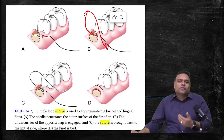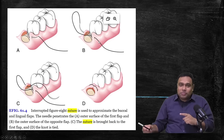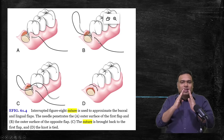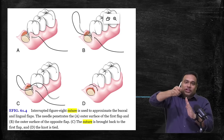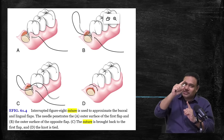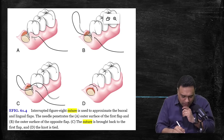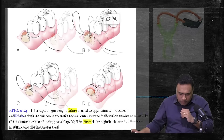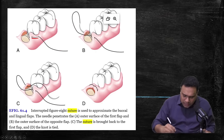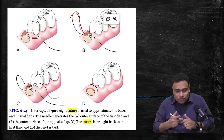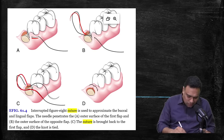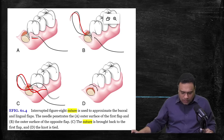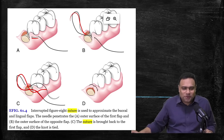The much easier way of suturing is the figure-of-eight technique. In the figure-of-eight, I pass the needle from the buccal aspect — it comes out easily — and then again I'm going from the outside. I'm not going from the inside like in the simple loop suture. I enter from the buccal aspect, the needle comes out, and again I enter the lingual flap from the outer aspect — not from the inner aspect. It moves like this and comes out there — your interrupted figure-of-eight suture.